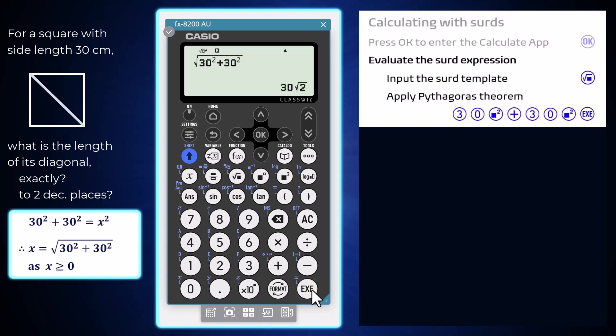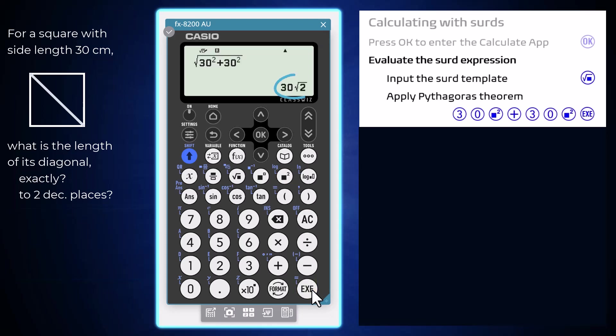Pressing execute, the 8200 provides an exact value for this length in the form of a simplified surd, as this exact output is its current and default setting.